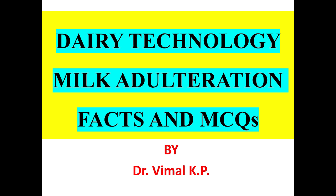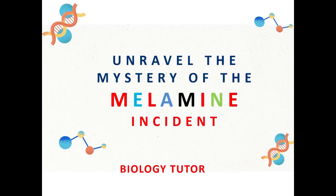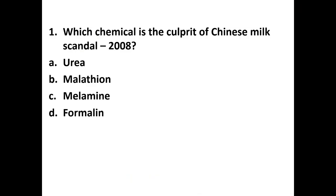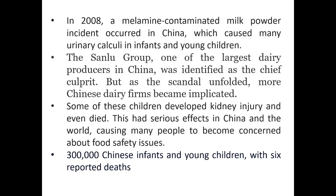All of these incidents are related to milk in dairy technology, and we will unravel the mystery of the melamine incident. First question: which chemical is the culprit of the Chinese milk scandal 2008? A) Urea, B) Malathion, C) Melamine, D) Formalin. The answer is C — melamine.